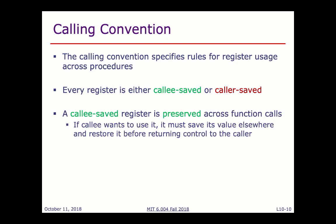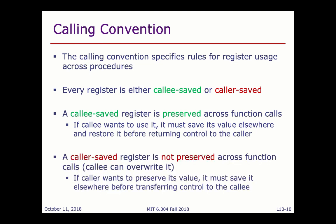Callee-saved registers are preserved across function calls — when the callee returns, all callee-saved registers are as they were before the call. The callee must save and restore them if it wants to use them. By symmetry, caller-saved registers are not preserved across function calls — the callee may freely overwrite them. If the caller wants to preserve their values, it must save them before calling and restore them after.